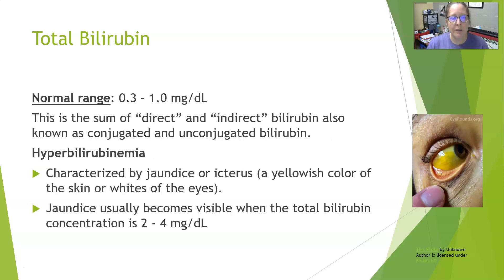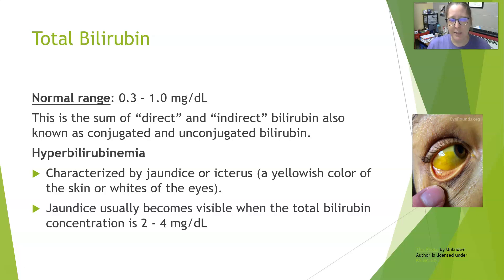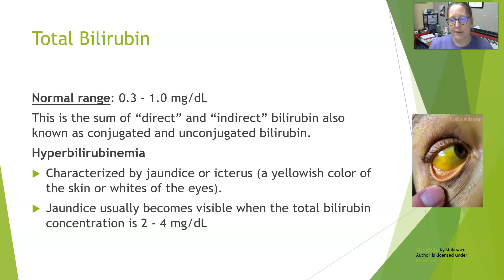The total bilirubin normal range is 0.3 to 1.0 milligrams per deciliter. Total bilirubin is the sum of direct and indirect bilirubin, also known as conjugated and unconjugated bilirubin. Bilirubin comes from the breakdown of red cells — specifically from the heme portion of hemoglobin being destroyed and recycled. The bilirubin is lipid soluble.